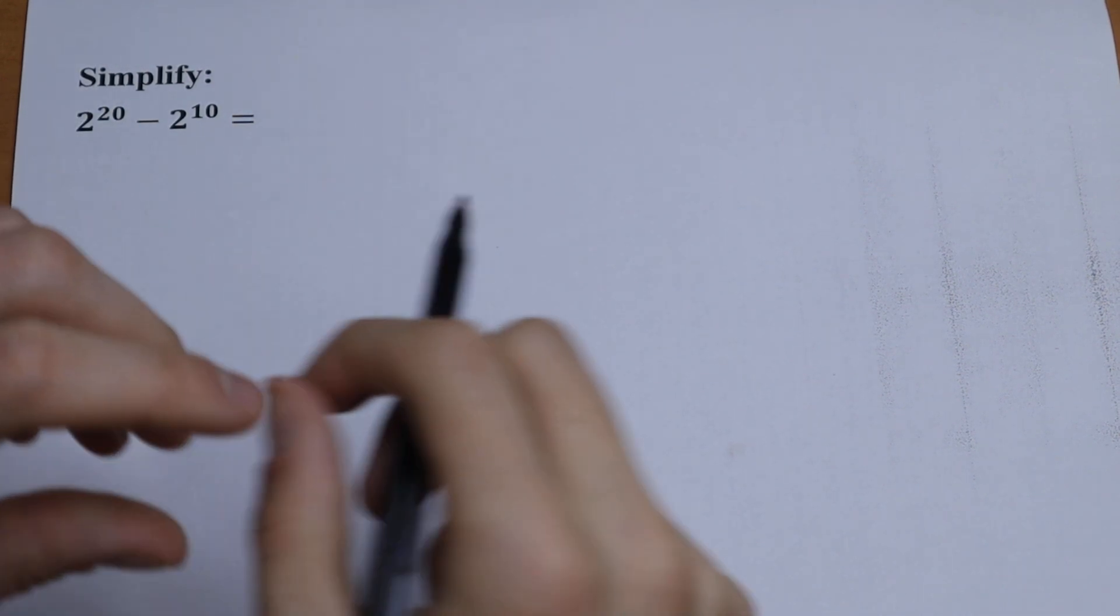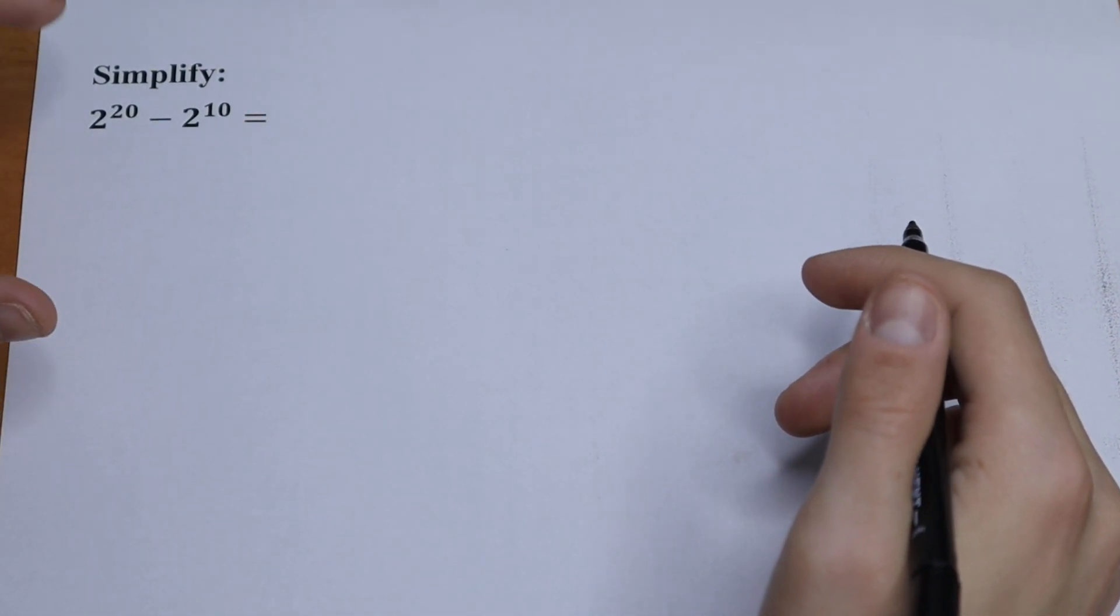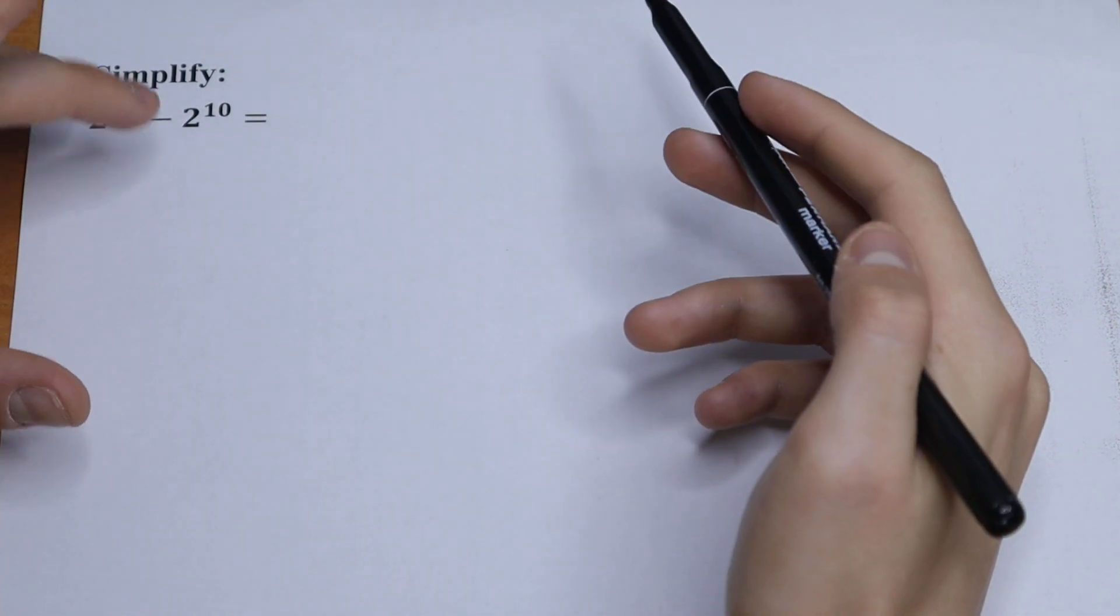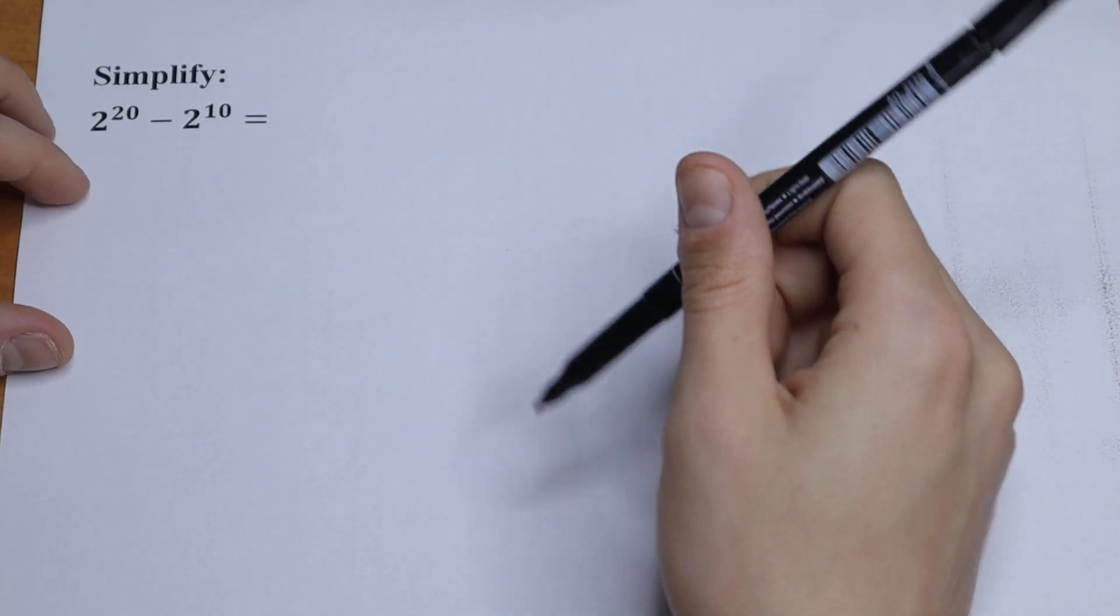Hello everyone, welcome back to Math Mode. Today we have an interesting algebra problem. We need to simplify this: 2 to the 20th power minus 2 to the 10th power. How can you do this?